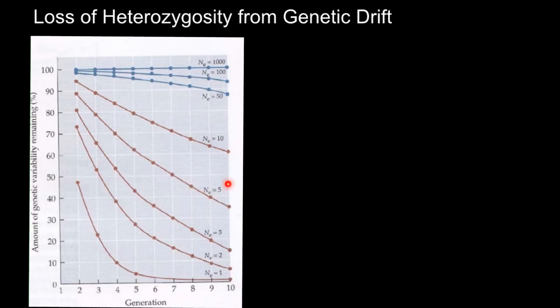With an effective population size of just five individuals, this decline happens even faster. For example, after about eleven or twelve generations we are going to lose some alleles, and there will be fixation — meaning only one allele would be left. With an effective population size of 50 animals the decline is much smaller, with 100 even smaller after ten generations, and with 1,000 individuals the population remains stable.